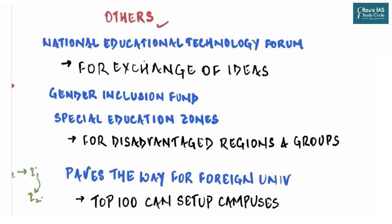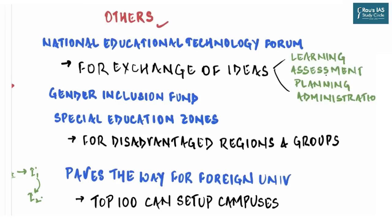Other provisions include the National Educational Technology Forum — an autonomous body to provide a platform for free exchange of ideas on the use of technology to enhance learning, assessment, planning, and administration. The Gender Inclusion Fund is very important and innovative: NEP 2020 emphasizes setting up of a gender inclusion fund as well as special education zones for disadvantaged regions and groups, with details to emerge as more information comes out.